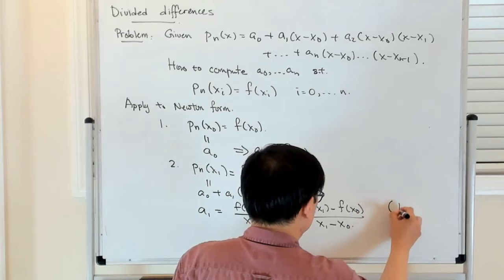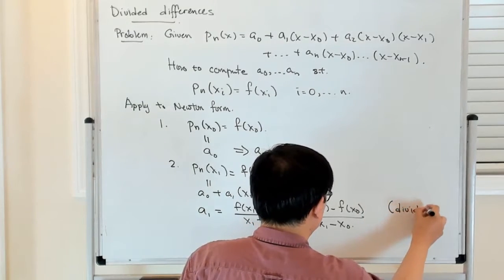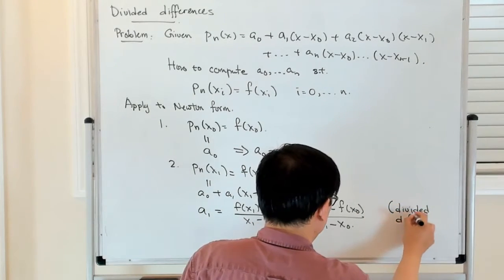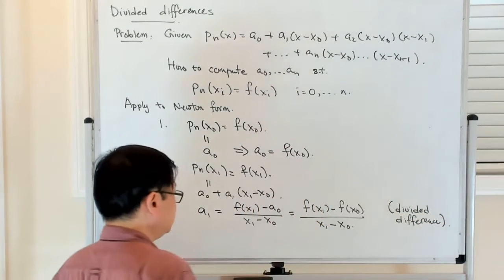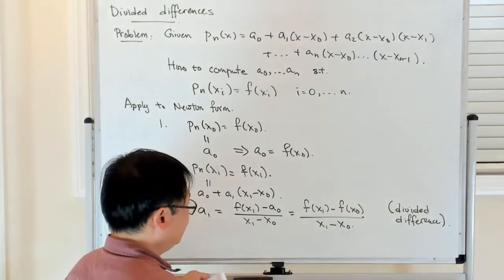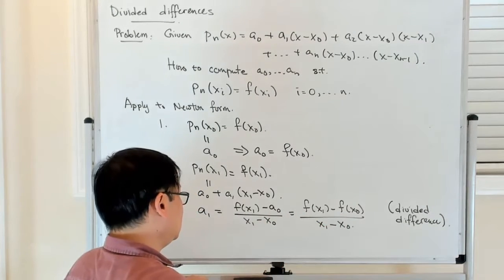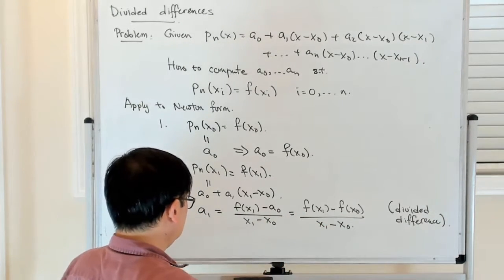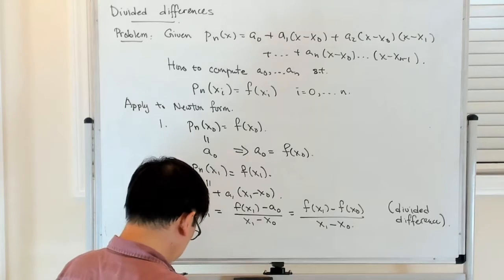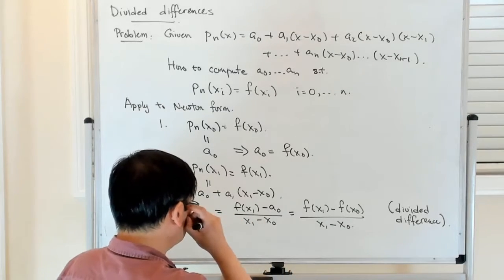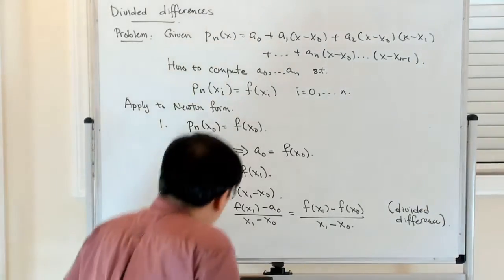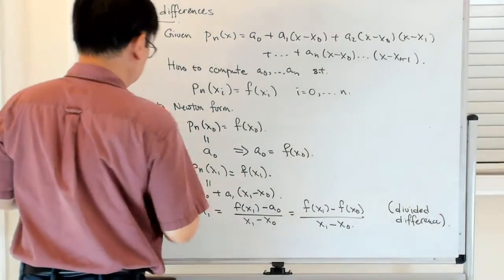So this is what is called a divided difference. It looks a little bit like a derivative. It's sort of a secant approximation of a derivative. And let's do one more in a second. We'll see that this kind of idea plays out again and again.